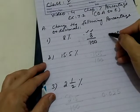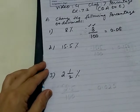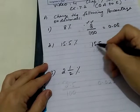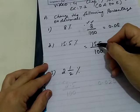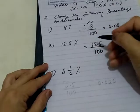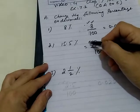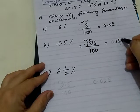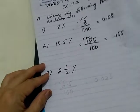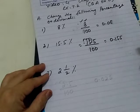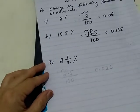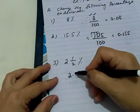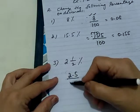The answer is 0.08. Second question: 15.5 percent means 15.5 upon 100. Moving the decimal point two places to the left, the answer is 0.155. Third question: 1 upon 2 percent means 0.5 percent, so we write 0.5 upon 100.